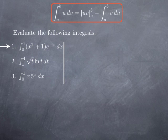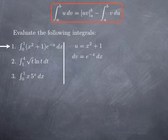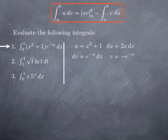For the exponential e^(−x), whether we differentiate or integrate, we do not change the complexity. For x² + 1, if we differentiate we get the linear function 2x, while if we integrate we get a cubic function. Therefore, it seems natural to pick u = x² + 1 and dv = e^(−x) dx. That means du = 2x dx, and an antiderivative of e^(−x) is v = −e^(−x).